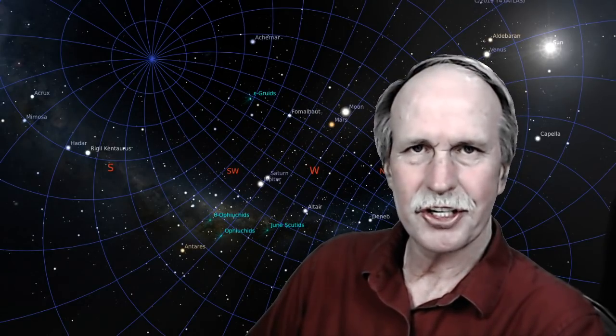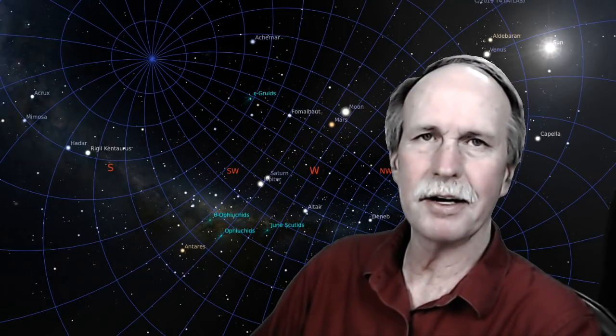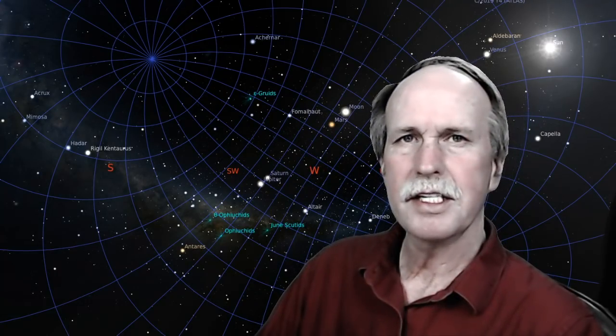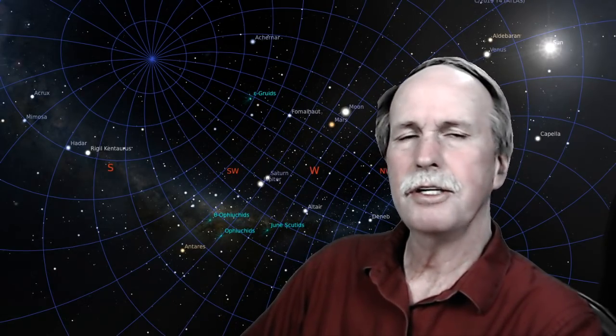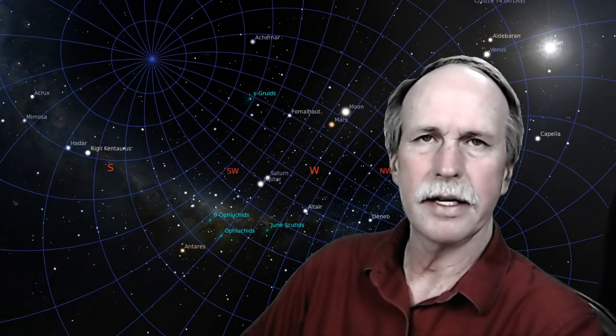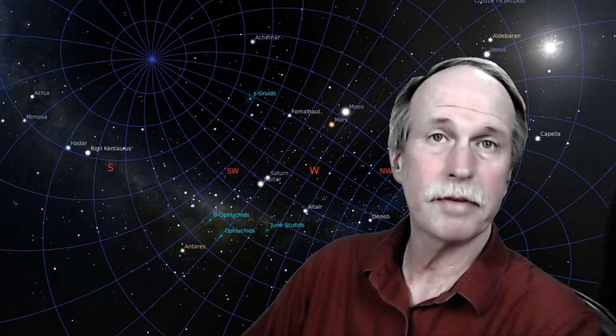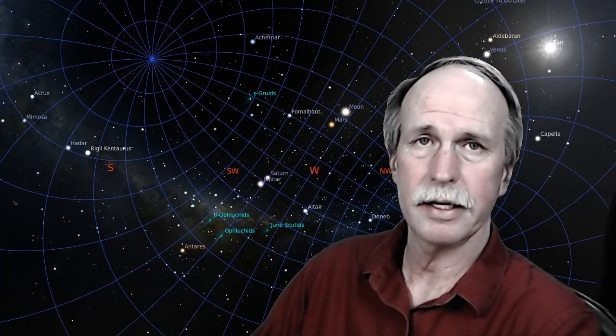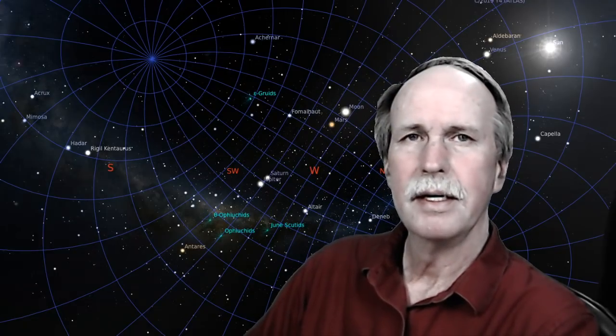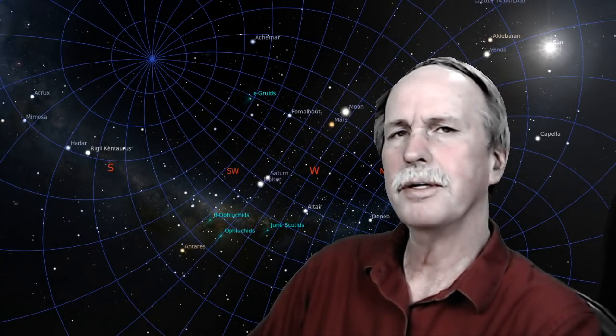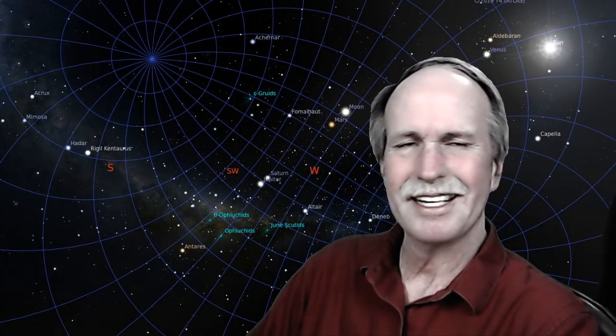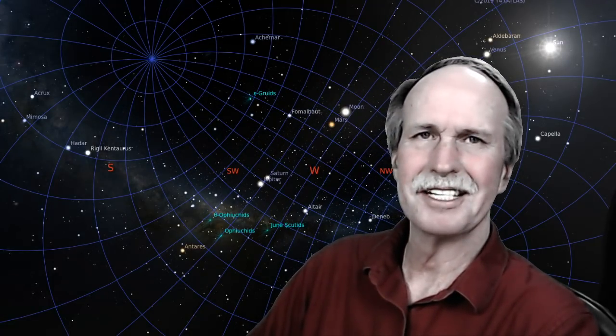Well, hi everyone and greetings from northern Michigan. This is Bob the Science Guy, and today we're back for the second half of our look at Russian vids. In this episode we're going to have a look at his use of Stellarium, a free planetarium program available on the internet — link in the description — to try and claim that southern star trails somehow don't fit the globe model. So let's cue up the music and see some more of this silliness.